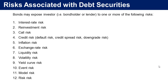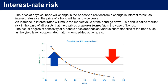We're going to talk about each of them in more detail in the coming few videos. So let's begin with interest rate risk. The price of a typical bond will change in the opposite direction from a change in interest rates — as interest rates rise, the price of a bond will fall, and vice versa.